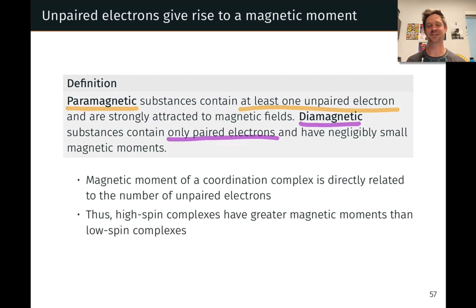Diamagnetic substances contain only paired electrons. I like to remember this by the prefix dia corresponding to two indicating a pairing of all of the electrons.